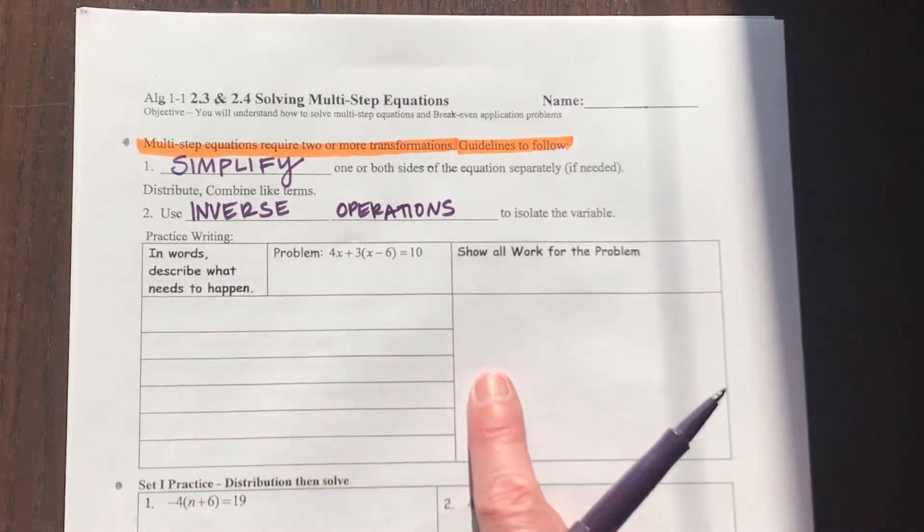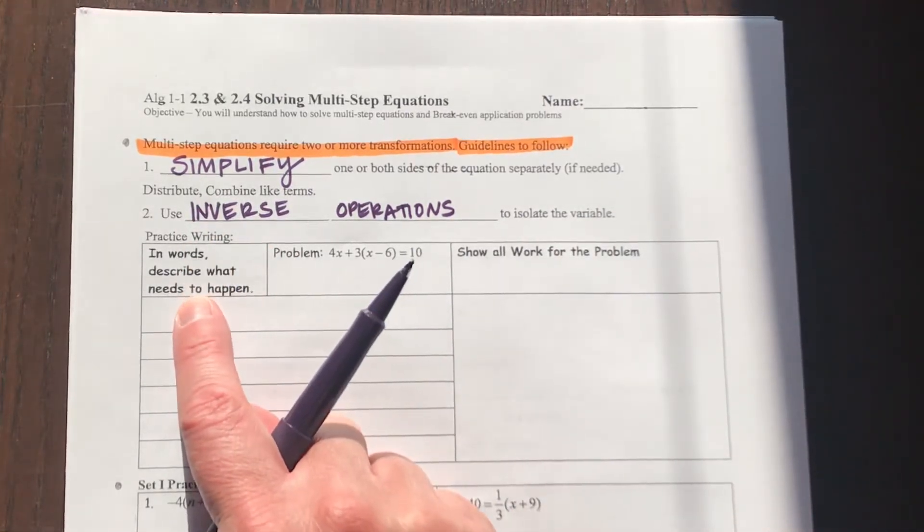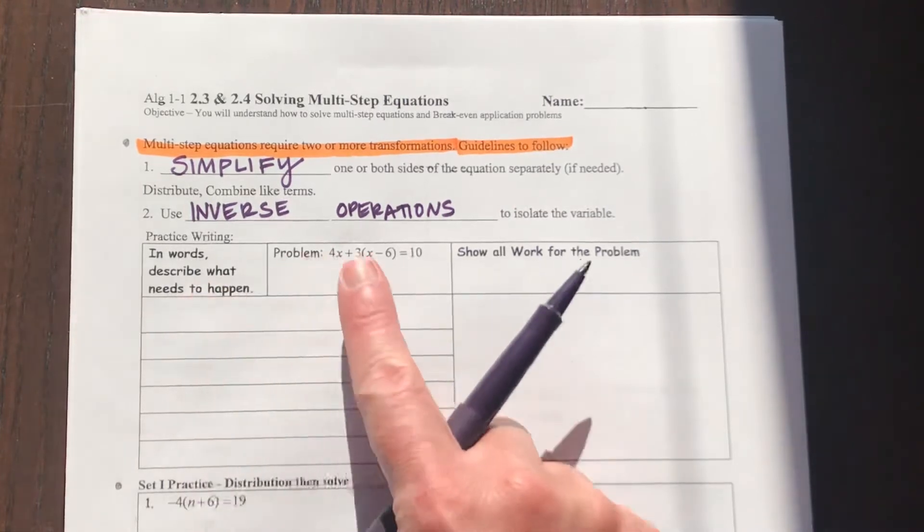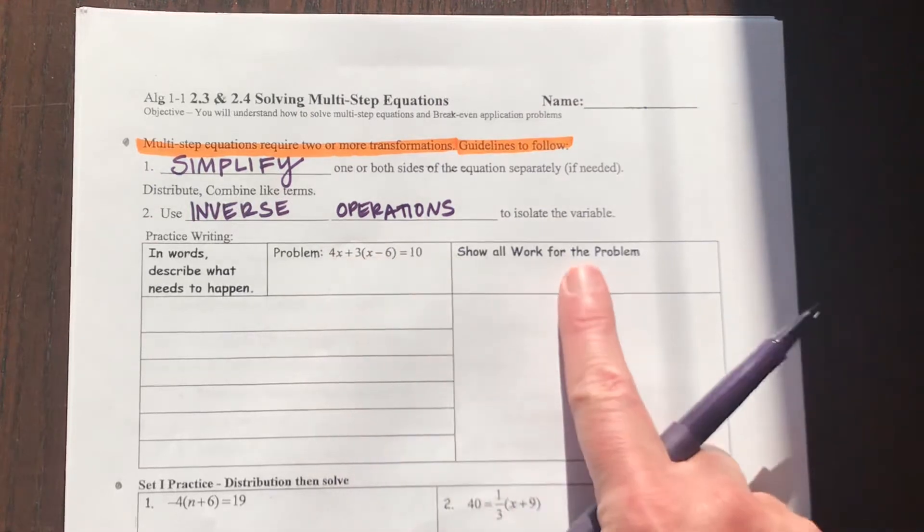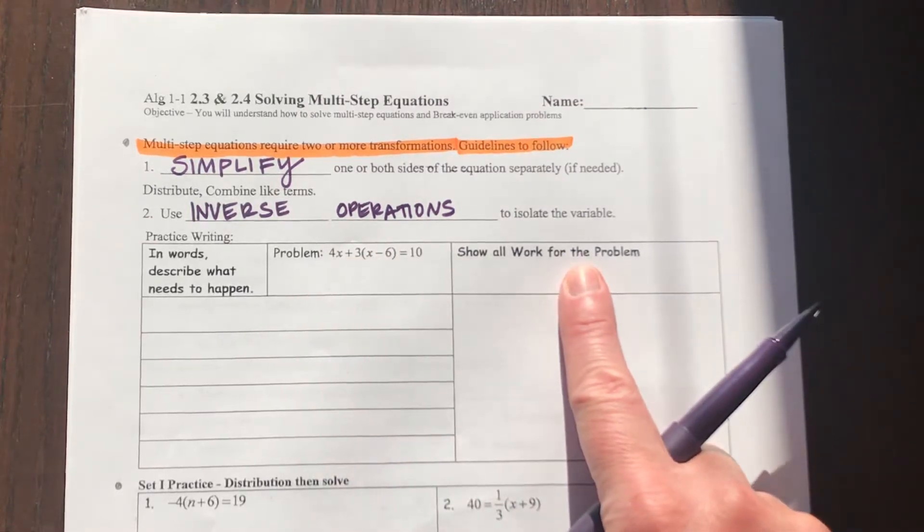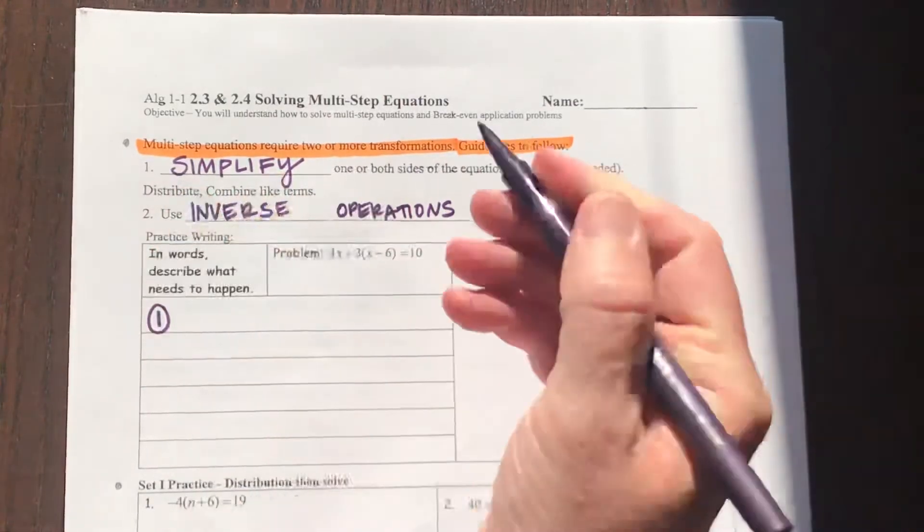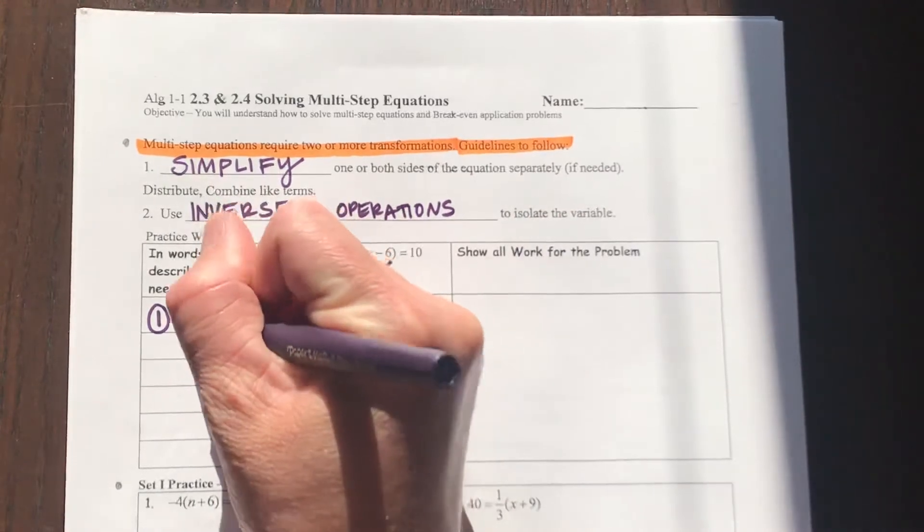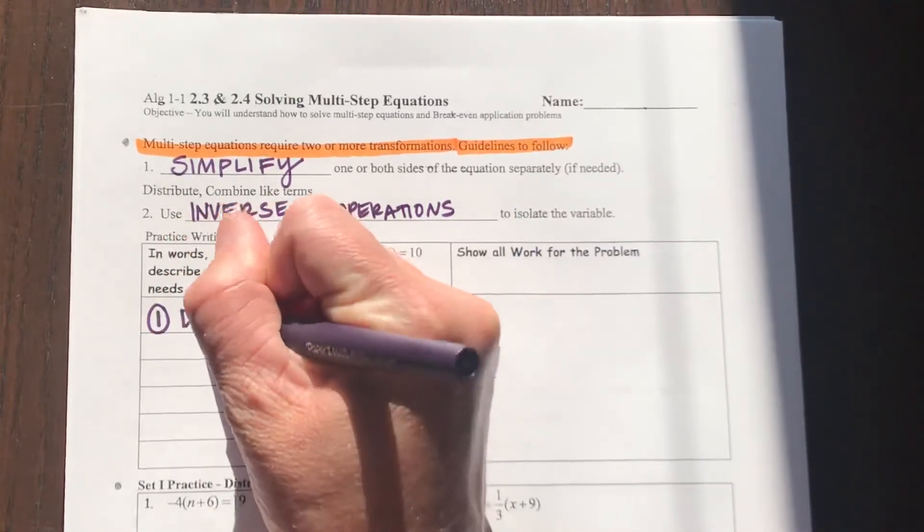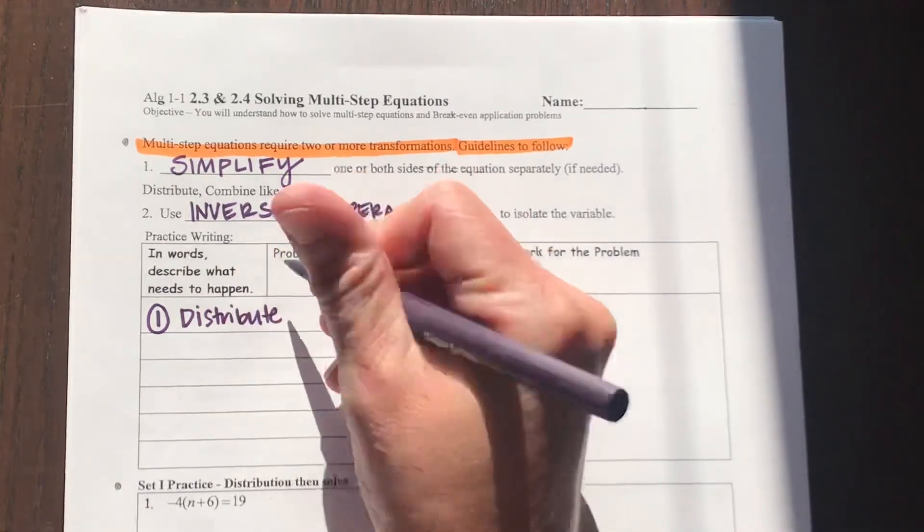So here's some practice. We're going to practice some writing. In words, I'm going to describe what needs to happen. Here's our problem that we're going to solve, and I'm going to show my work for the problem as I go. My first step is going to be to distribute this three. So step number one, distribute the three.